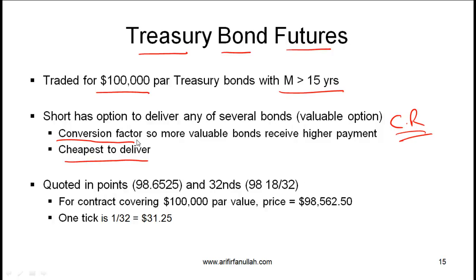The bond that is cheapest for the short to deliver is called the cheapest to deliver. The calculation of conversion factors is covered in Level 2. All you really need to know at this stage is that dealing with treasury bond futures involves the complication that the short can choose from several different bonds, the exchange has a conversion factor formula for each bond, and despite that formula there will always be a bond that is cheapest or best for the short to deliver — the cheapest to deliver.